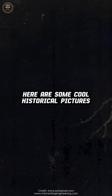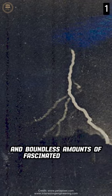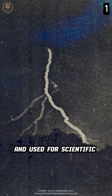Here are some cool historical pictures. One of the very first pictures of lightning, taken by photographer William Jennings in 1882 with a grainy camera and boundless amounts of fascinated interest. This changed how lightning was previously thought of and used for scientific advancements.